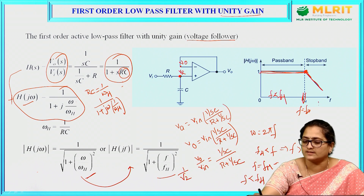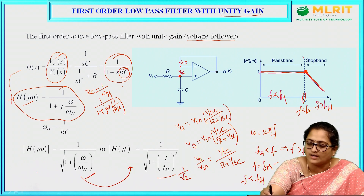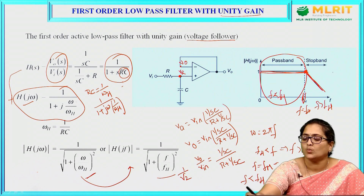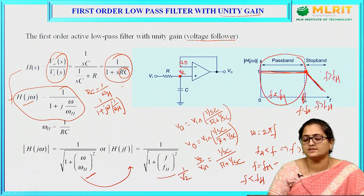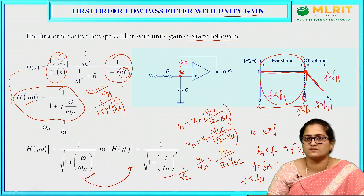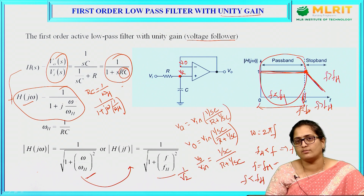When f is greater than fh, the gain rolls down with frequency. The frequency range from 0 to fh, where f is less than fh, is called the passband. When frequency is greater than fh, it is called the stopband. Only frequencies from 0 to fh are allowed to pass through the low pass filter; the remaining frequencies are stopped.